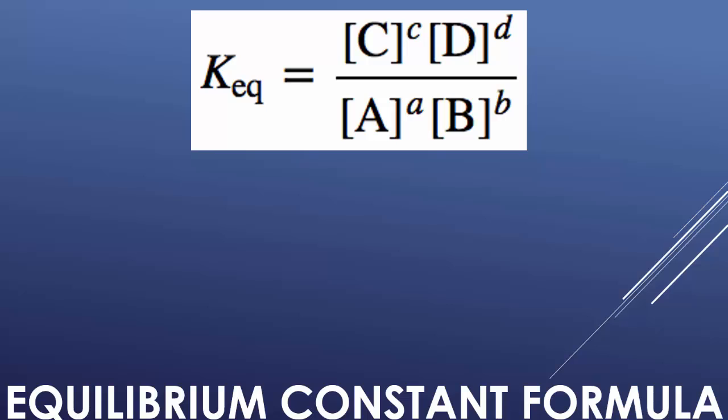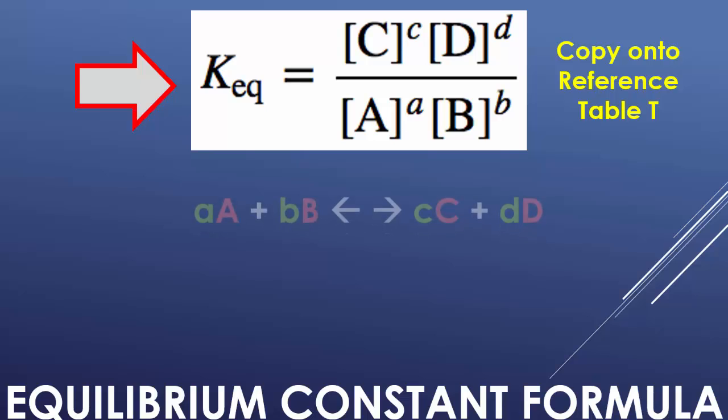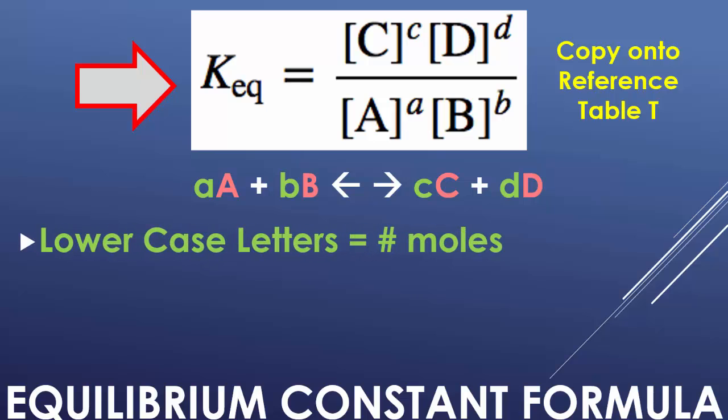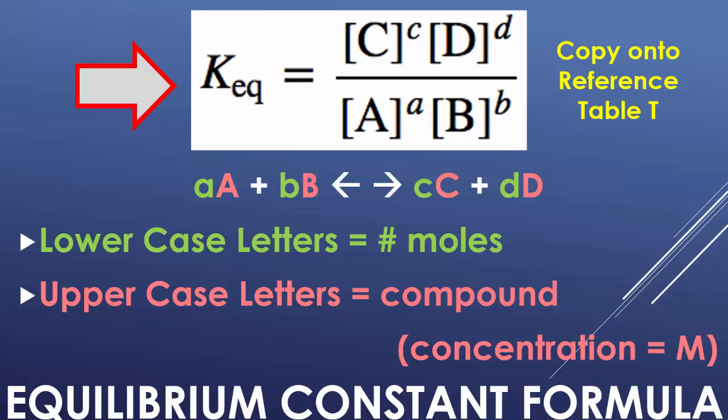Here is the KEQ formula. The C's and D's represent our products. The A's and B's are going to represent our reactants. We would like you guys to write this into your table T so that you have it for class and quizzes. The little a's represent the moles. The capital letters represent the actual substance.